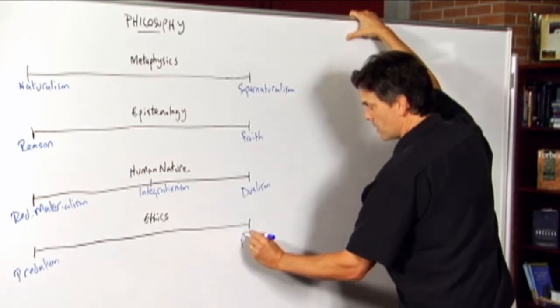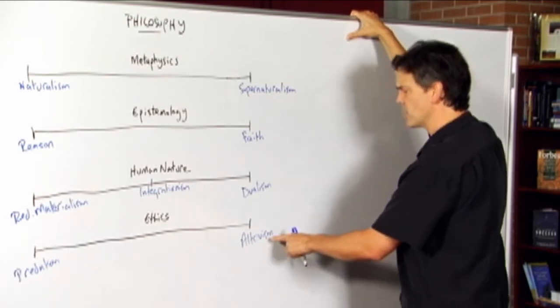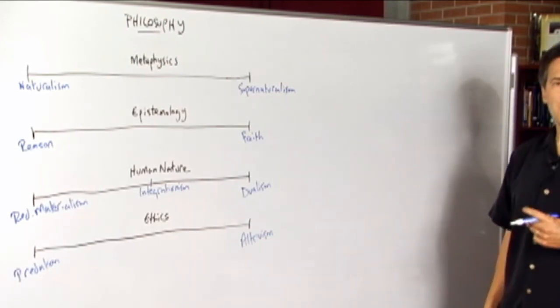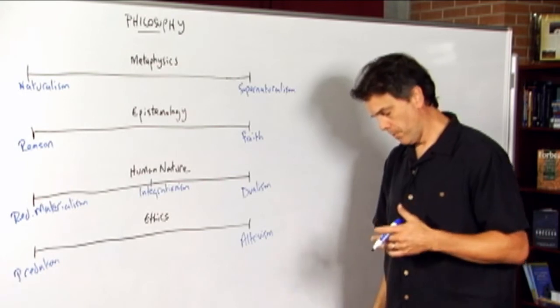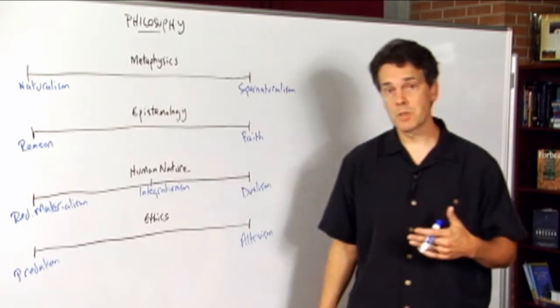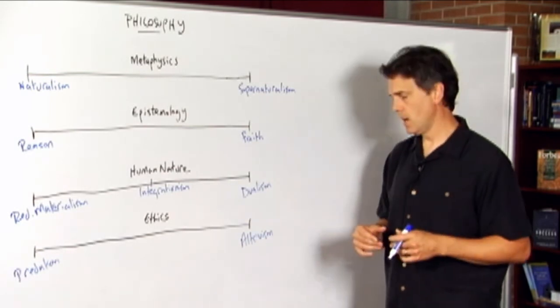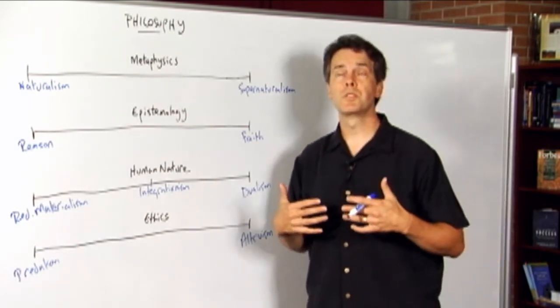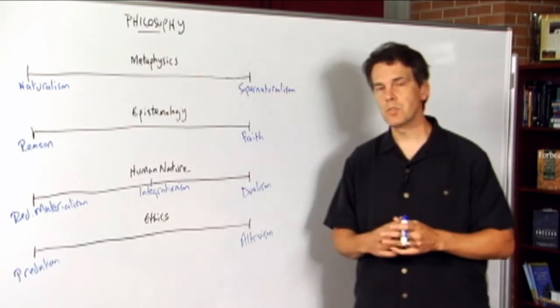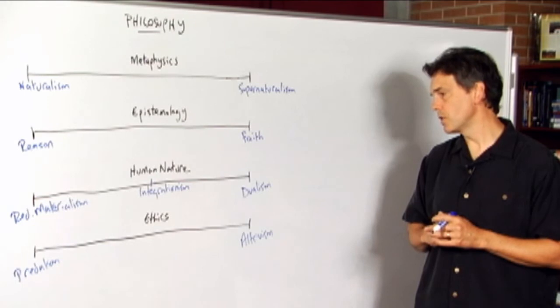At the other end of the spectrum we developed a position called altruism. This position as a matter of principle arguing that one is a good person only to the extent one does not do what's in one's self-interest. Instead, one always considers the other or the alter, and it's one's service to others or sacrifice to others that marks one's goodness as a human being.